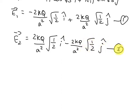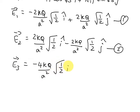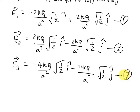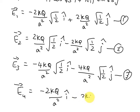The electric field at P due to the +2Q charge, E3 vector, equals −(4KQ / A²)·(1/√2) ĵ. This is equation 3. The electric field at P due to −Q, E4 vector, equals −(2KQ / A²) î − (2KQ / A²) ĵ. This is equation 4.